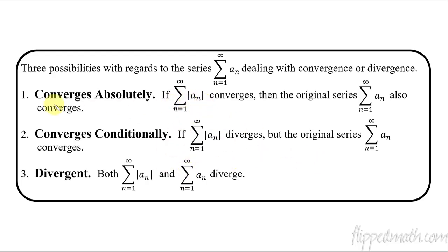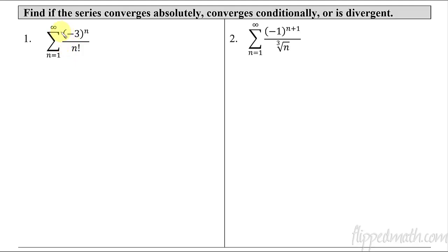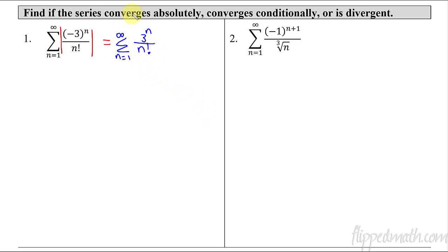Let's start off with the first example. What we do is look first at the absolute value — I'm going to put absolute value symbols here and rewrite the new series from n equals one to infinity. If you have an alternating series like this, going negative, positive, negative, positive, the absolute value just gets rid of that. So now it's just three to the n over n factorial. The rough thing about this lesson is you have to take everything you've been learning in unit 10 and apply it here.